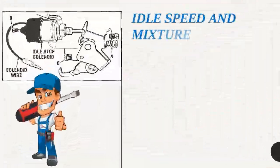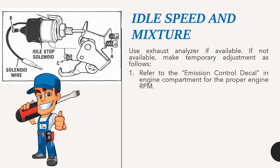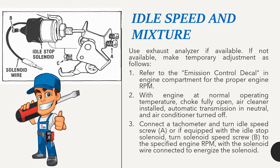Idle speed and mixture — solid fuel design: Use exhaust analyzer if available. If not, make temporary adjustment as follows. Refer to the emission control decal in engine compartment for proper engine RPM. With engine at normal operating temperature, choke fully open, air cleaner installed, automatic transmission in neutral, and air conditioner off, connect a tachometer. Turn idle speed screw A, or if equipped with idle stop solenoid, turn solenoid speed screw B to the specified RPM with solenoid wire connected to energize the solenoid.